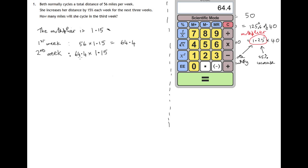So it's 1 times 64.4 plus 0.15 times 64.4. That's the 15% increase.